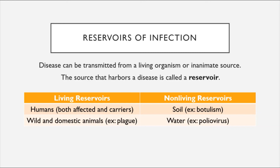Diseases endemic to a region may be constantly present because they are held in some sort of reservoir. The source that harbors a disease is defined as a reservoir, which can be living or non-living. Humans can harbor a disease whether affected or as a carrier. Wild and domestic animals can also be reservoirs — plague is carried by rodents. Non-living reservoirs include soil; for example, the bacterium that causes botulism is a soil bacterium. Water can also be a reservoir — poliovirus can be transmitted through water contaminated with sewage.